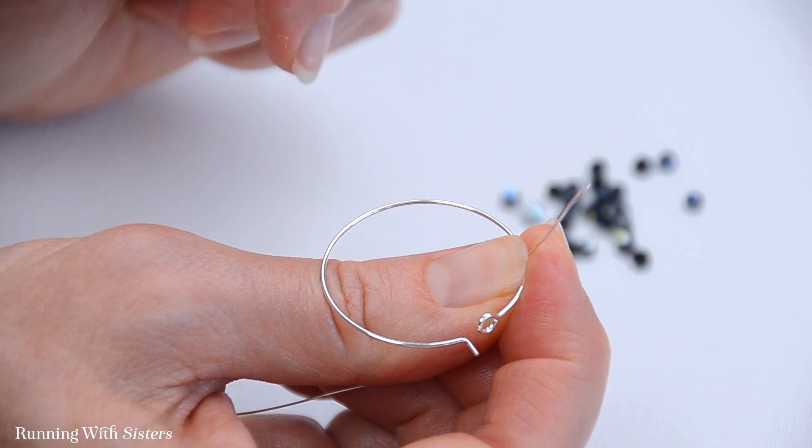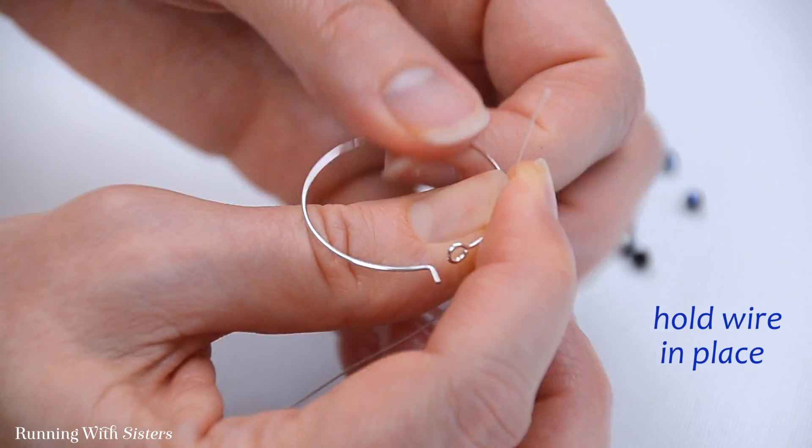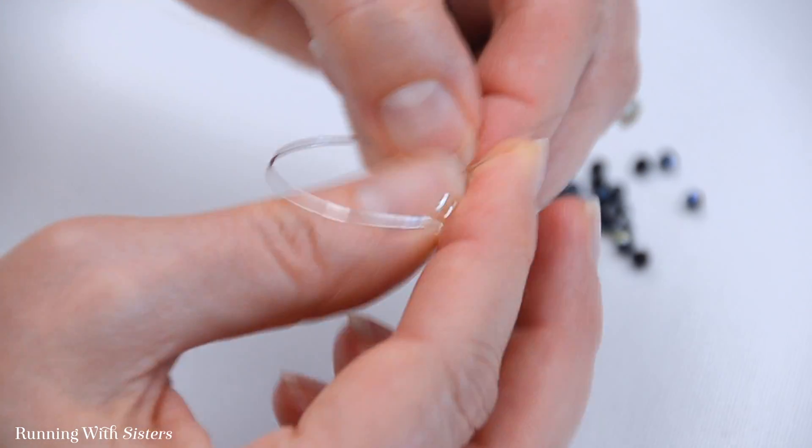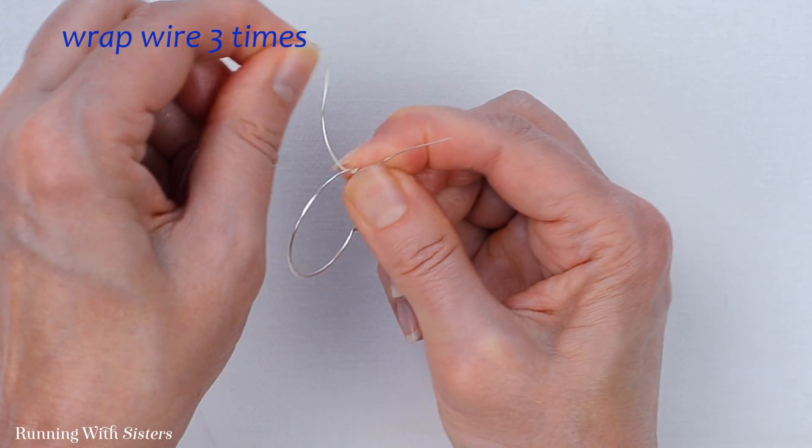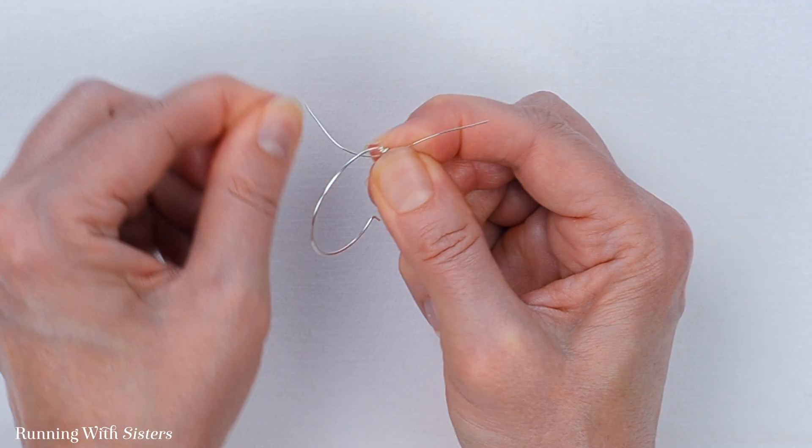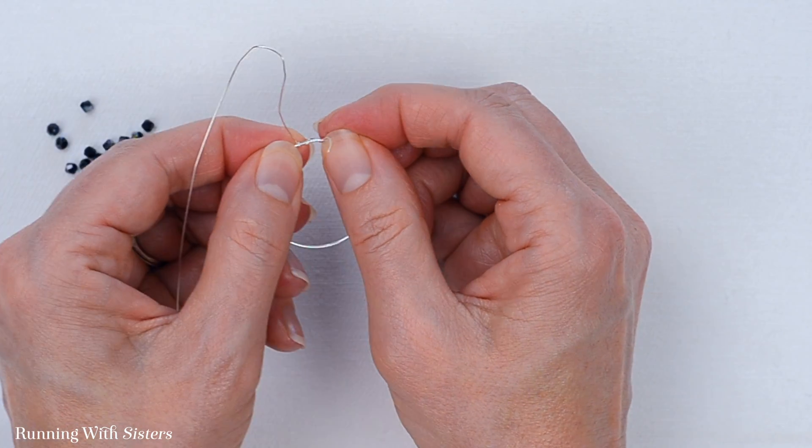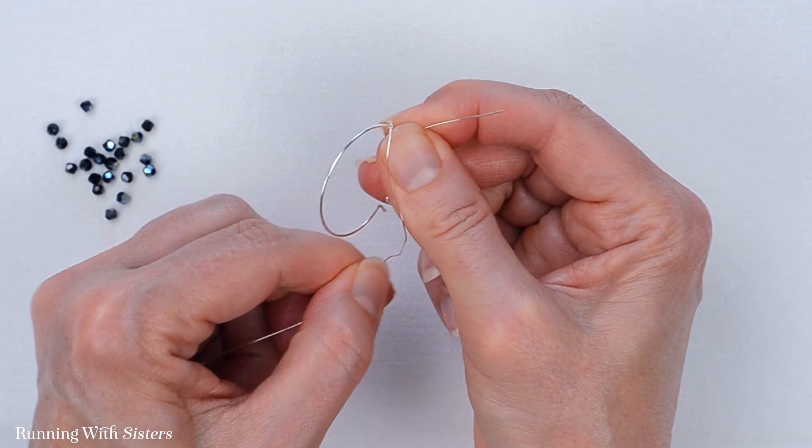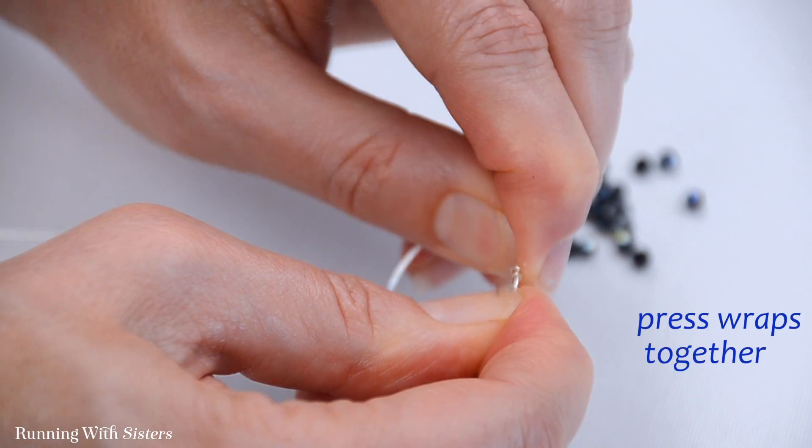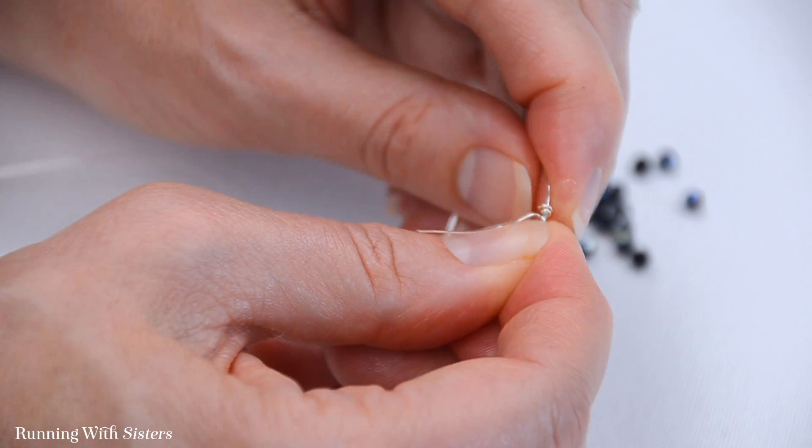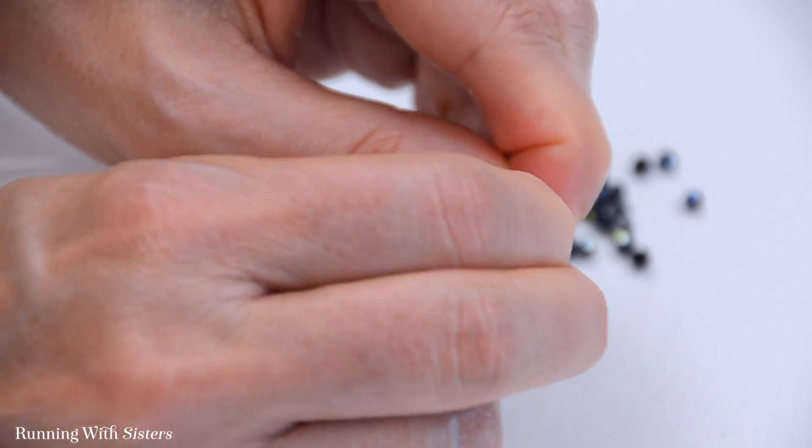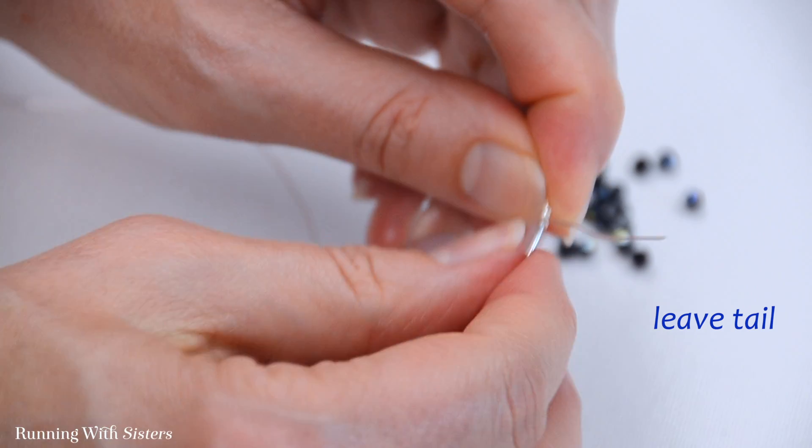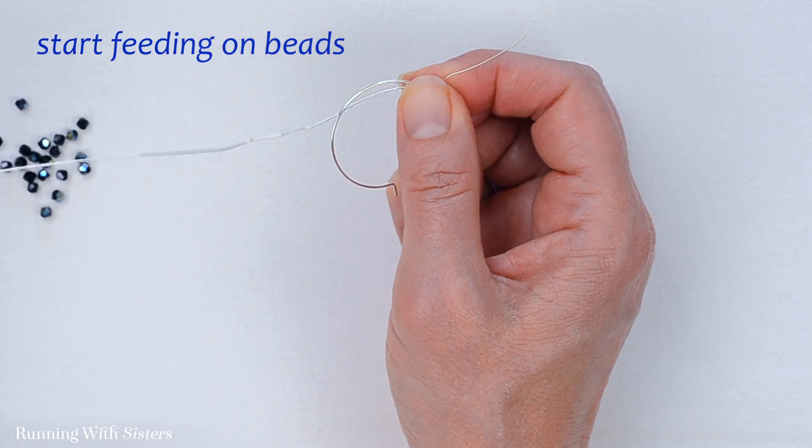I'm going to hold that on top of the earring hoop. This is the clasp end. I'm going to start on the clasp end. I'm going to hold that in place, and pull that wire through the hoop three times. What that does is give us a nice little place to start. I'm going to press those loops together. This wire is super malleable, so it's easy to work with and easy to press together. I'm just going to leave that tail, and then start feeding on beads.